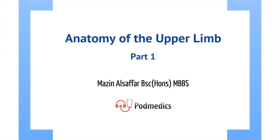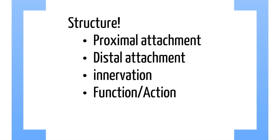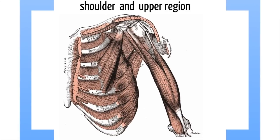Hello, my name is Mazan Alsifar and today we'll be talking about the anatomy of the upper limb. This will be part one of the series. I'm going to propose a structure today on how to learn your anatomical structures. You need to know the proximal attachment, the distal attachment, the innervation, and the function or action of the structure. Today I'm going to concentrate on the shoulder and upper region of the upper limb.